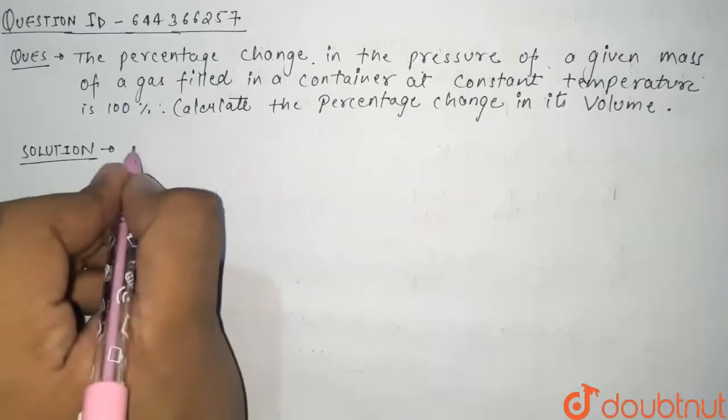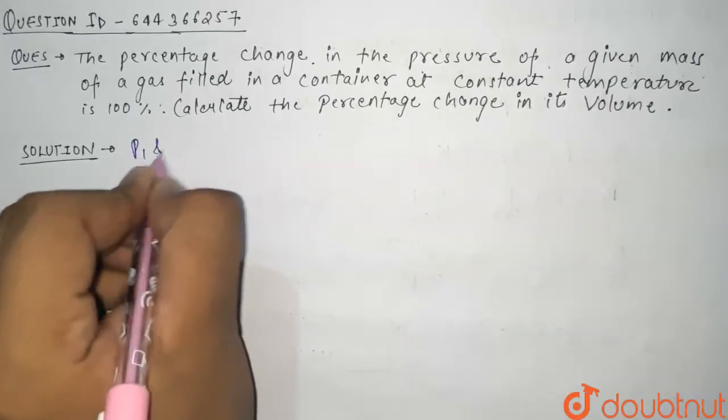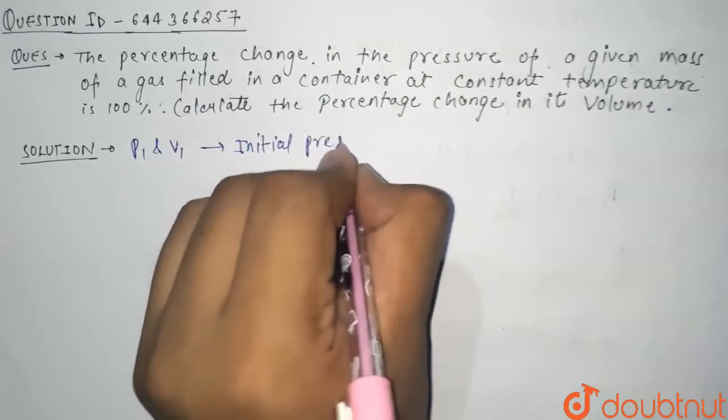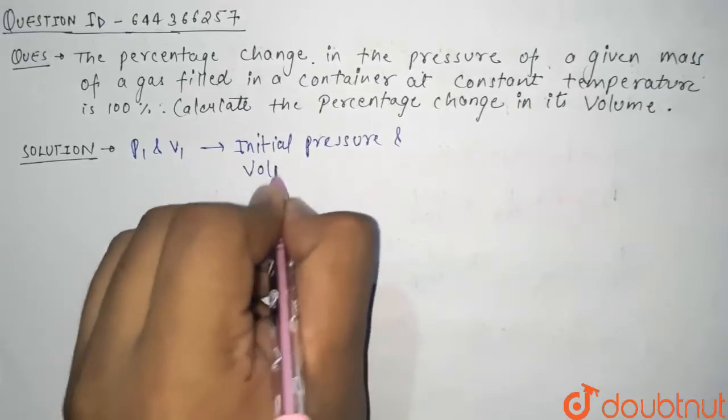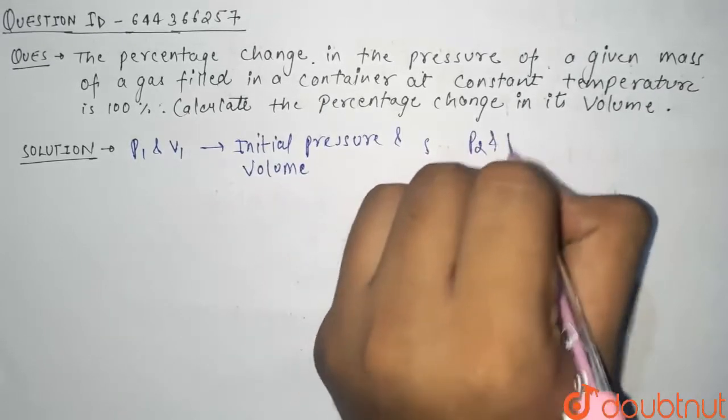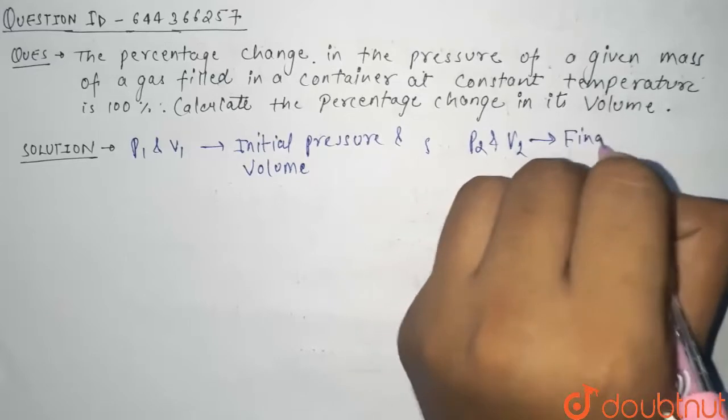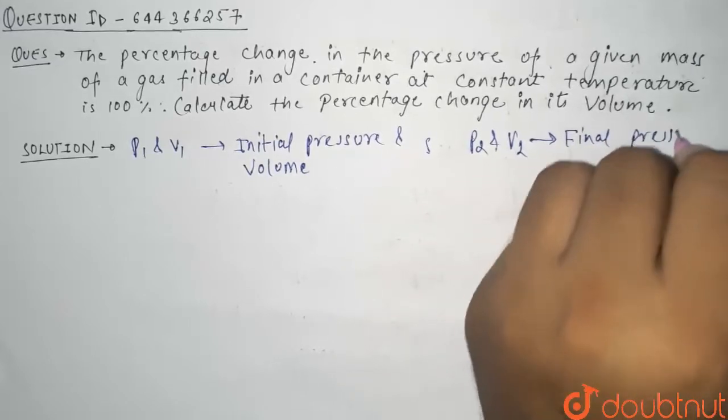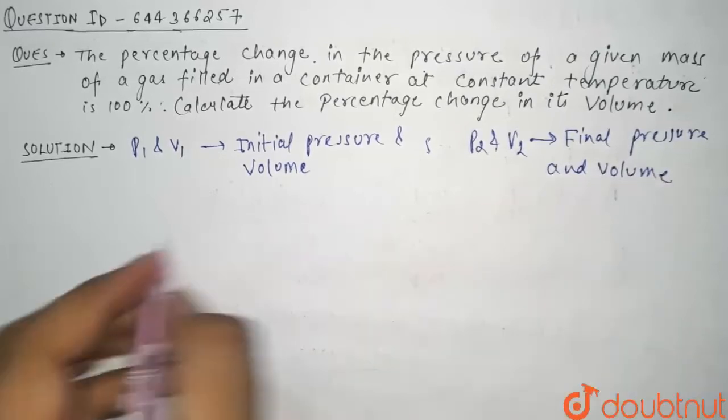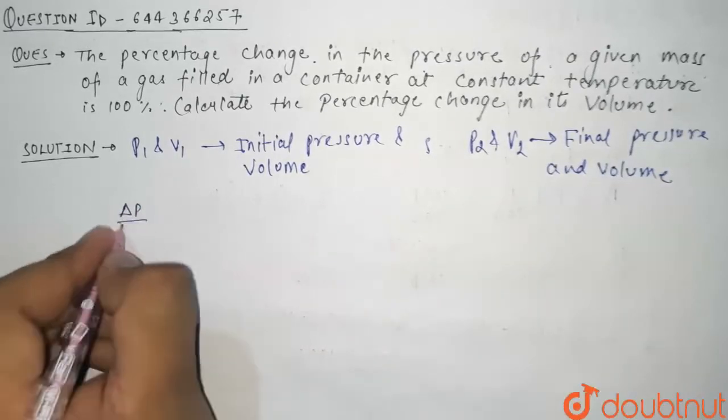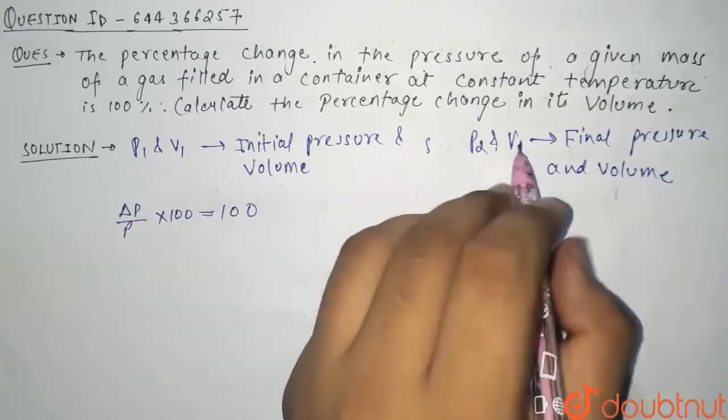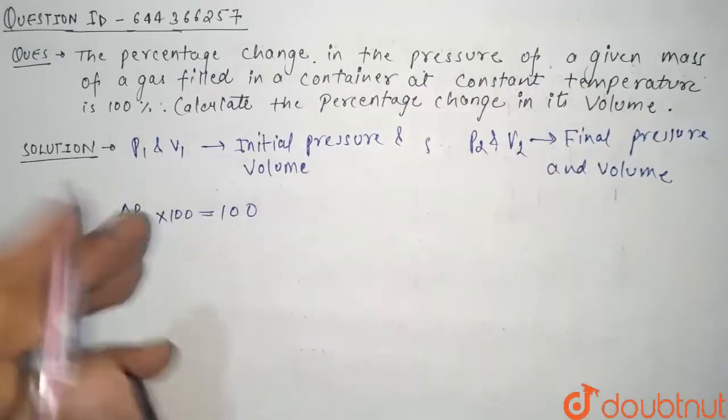So see here, let us assume that P1 and V1 are initial pressure and volume, and P2 and V2 are final pressure and volume. Now we have been given that delta P by P into 100 equals 100, because we have been given that the percentage change in pressure is 100%.